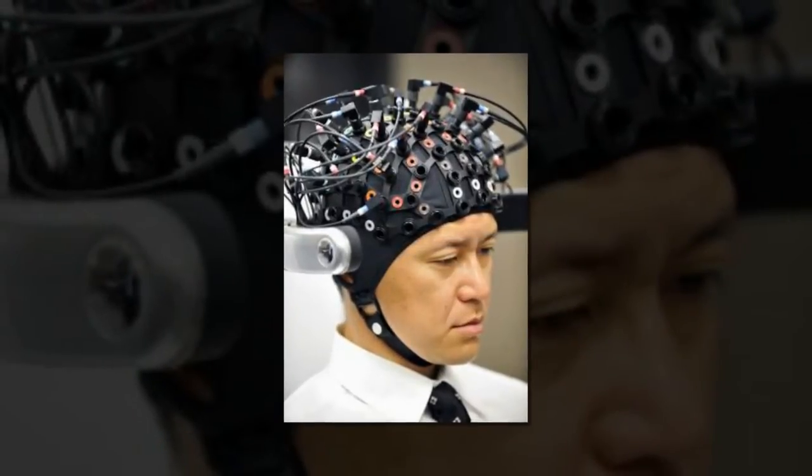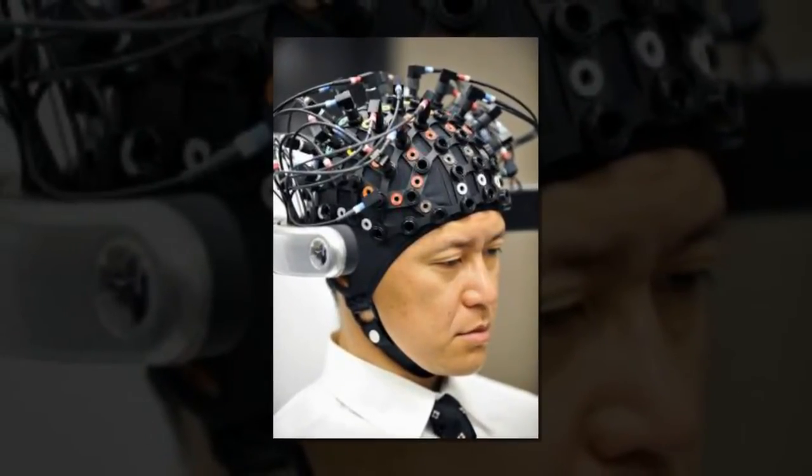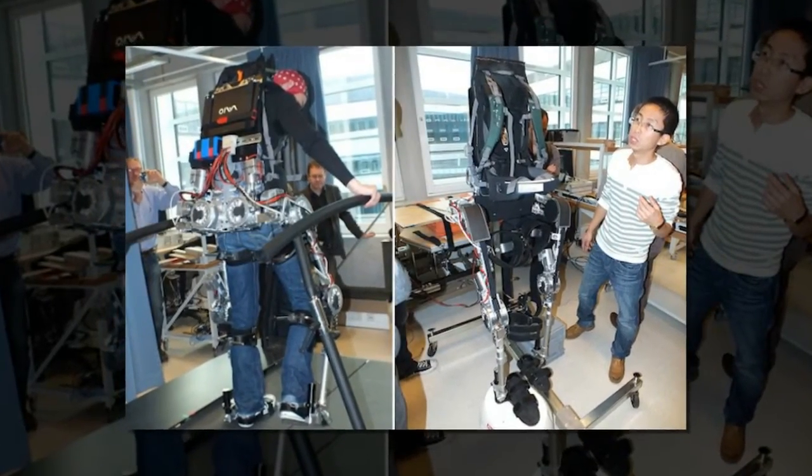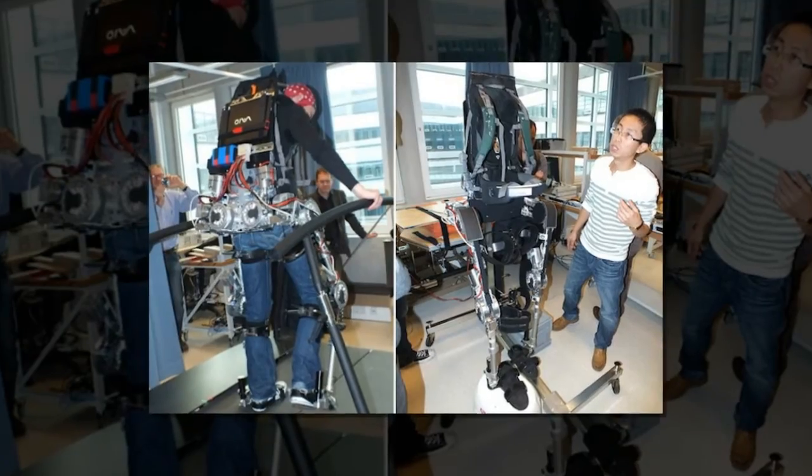Each of the five LEDs flickers at a different frequency, and when the user focuses their attention on a specific LED this frequency is reflected within the EEG readout. This signal is identified and used to control the exoskeleton.